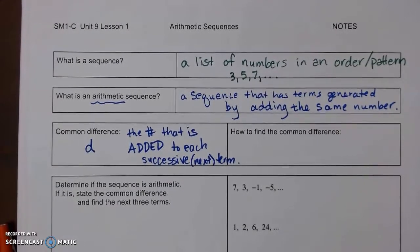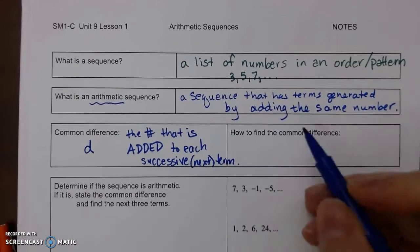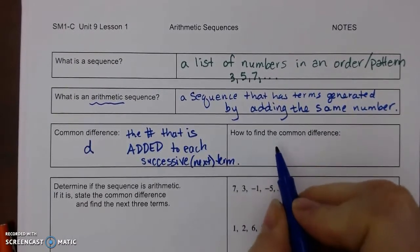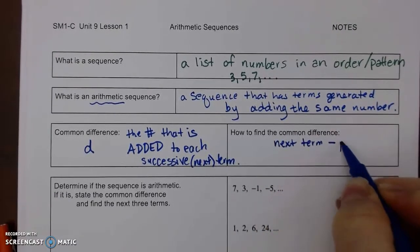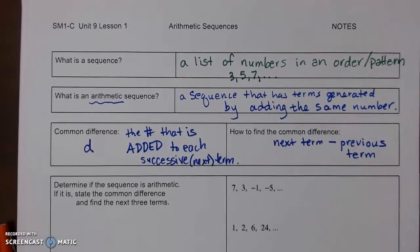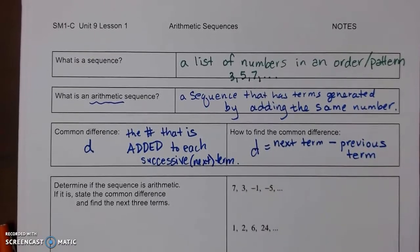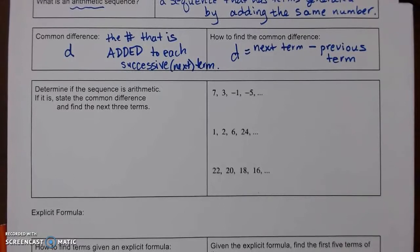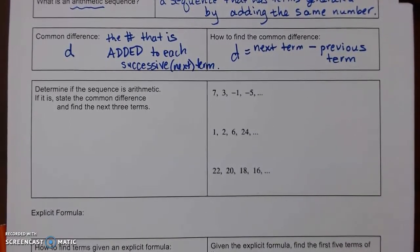Some patterns will be easy, but common differences can be decimals or fractions, and sometimes you just can't tell. To find the common difference, take any next term and subtract the previous term. If you get the same number each time, that's your common difference. In these examples, determine if each sequence is arithmetic — if yes, find d and the next three terms; if no, write 'not arithmetic.'